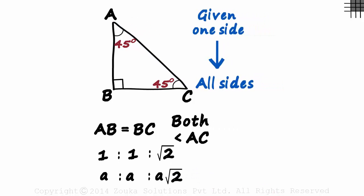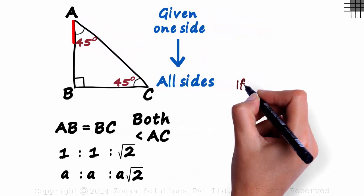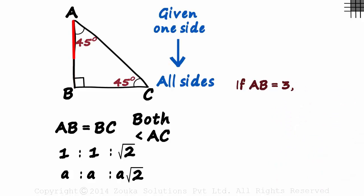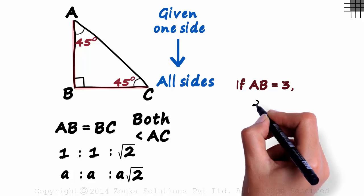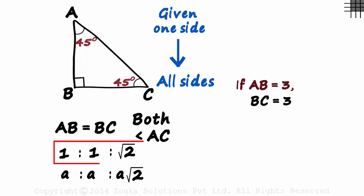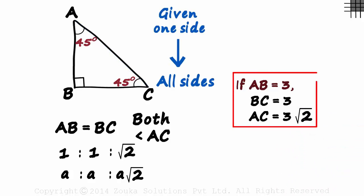Let's experiment with numbers. What if AB is 3? If this length is 3, then this one as well has to be 3, so BC will be 3. And based on the ratio, AC will be 3 root 2. This was easy.